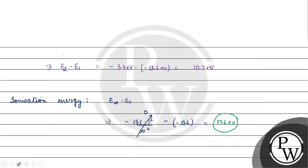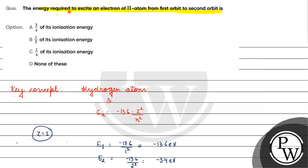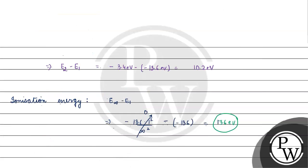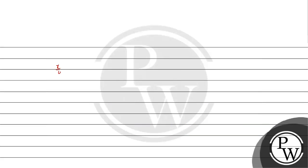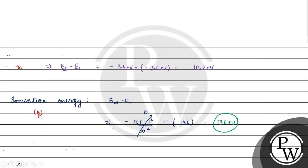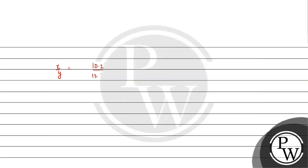Now, we need to find the relation between the excitation energy from first orbit to second orbit and the ionization energy. Let x denote the excitation energy and y denote the ionization energy. So x by y equals to 10.2 by 13.6 electron volt.